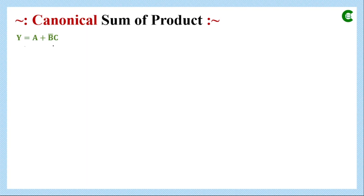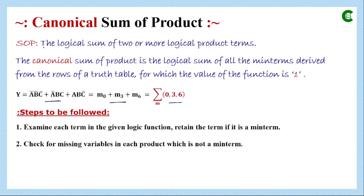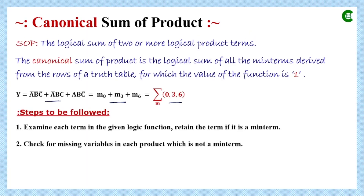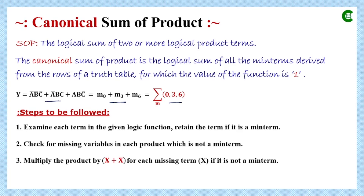The second term has B-bar and C with an AND operation between them, but it doesn't have A, so the second term is also not a minterm. The second step says: if a term is not a minterm, check for missing variables in each product term. In this function, the first term is missing variables B and C, and the second term is missing variable A.